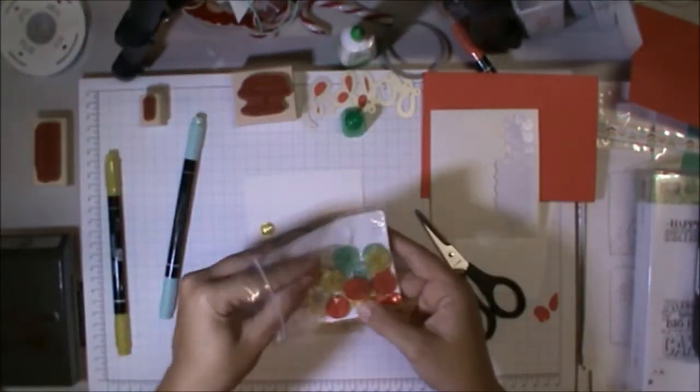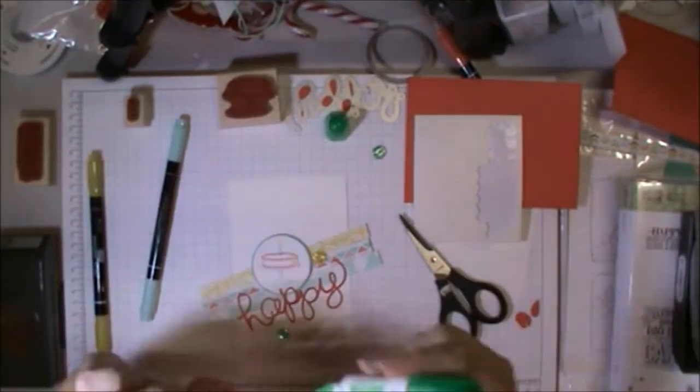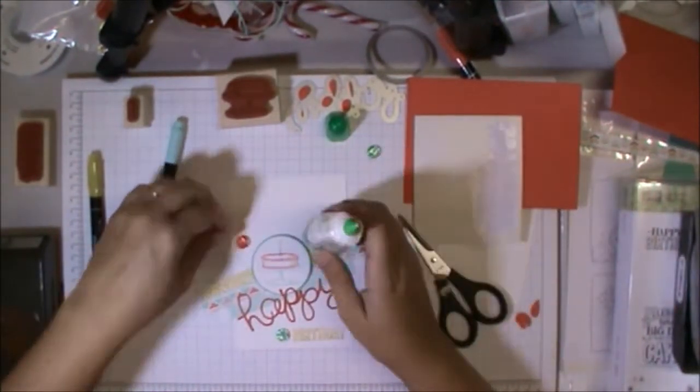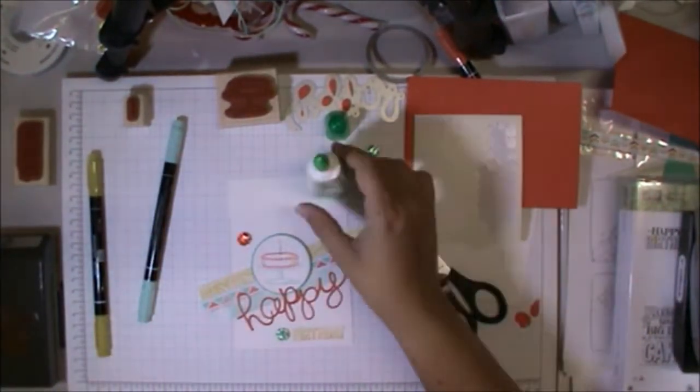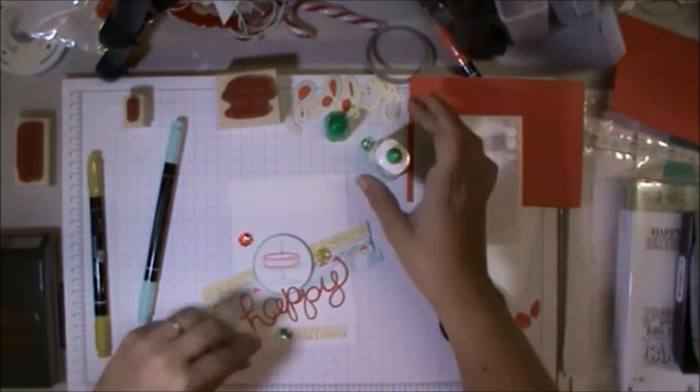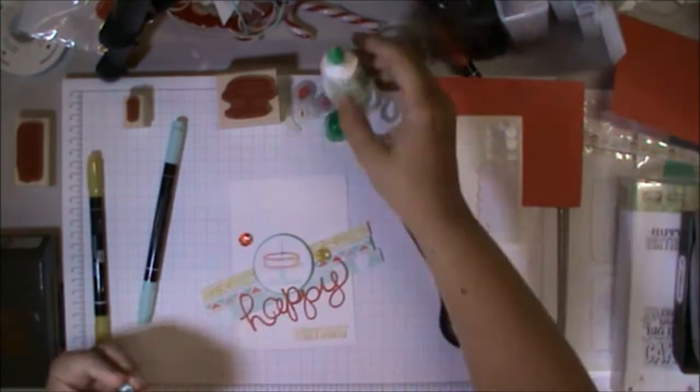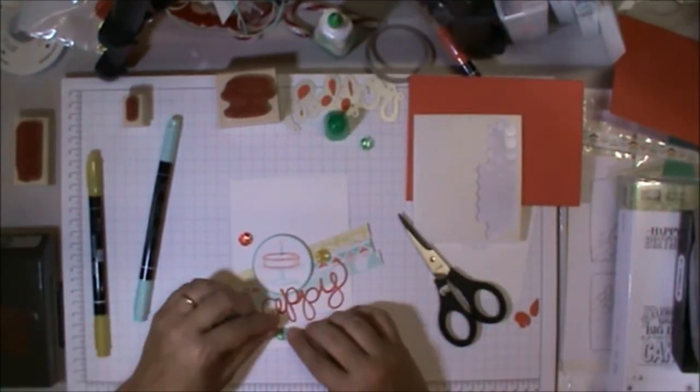These buttons are also from Sale-A-Bration. You can get a little pack of ribbon and buttons in Calypso Coral, Coastal Cabana, and Crushed Curry. It's super duper cute and great for little cards like this. I just glued those on.